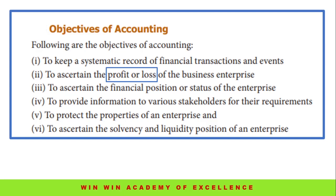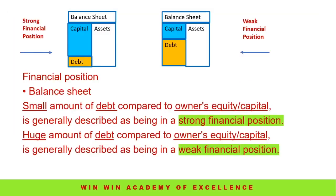The third objective of accounting is to ascertain the financial position or status of the enterprise. To determine the financial position, books of account are prepared along with the balance sheet.